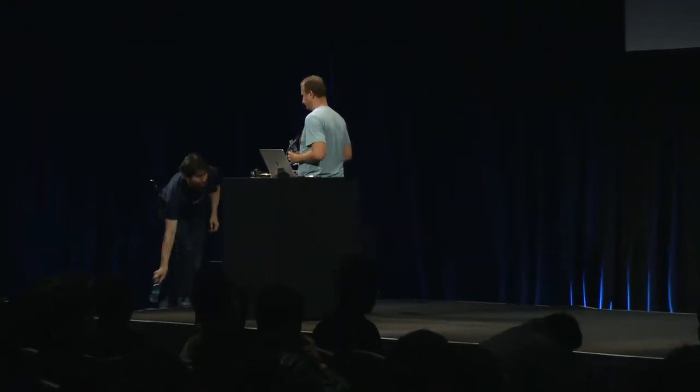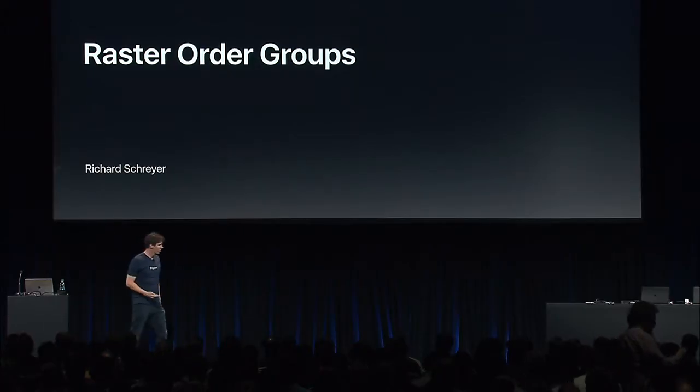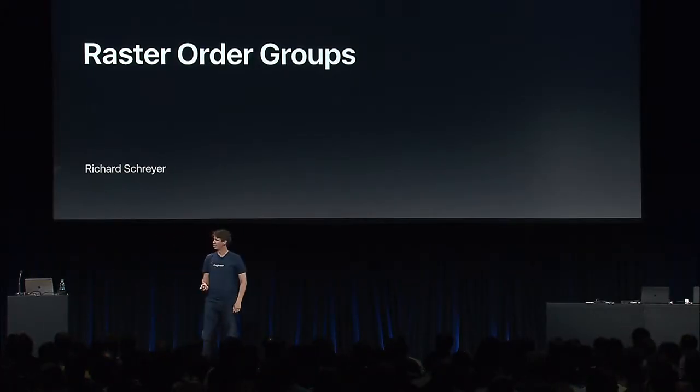That's it about argument buffers. I really hope you'll adopt our new API and get some creative use cases out of it. I'll now welcome Richard, who will talk about raster order groups. Raster order groups is a new feature that gives you control over the GPU's thread scheduling to run fragment shader threads in order, allowing overlapping fragment shader threads to communicate through memory.